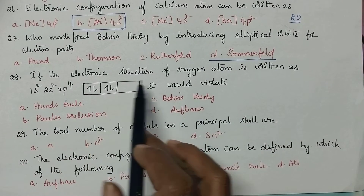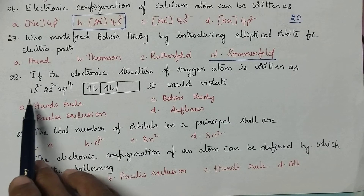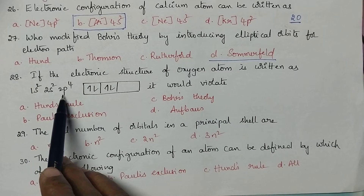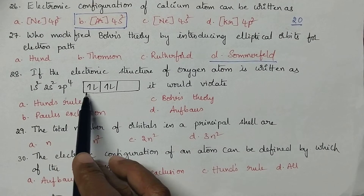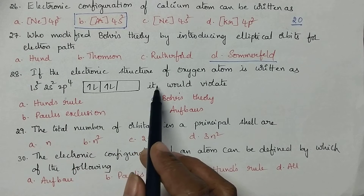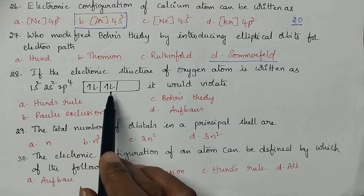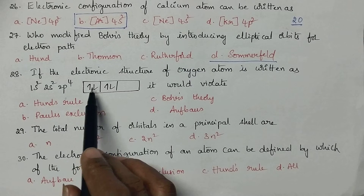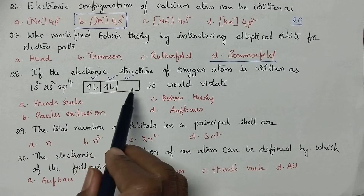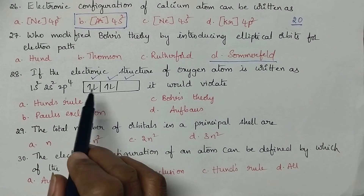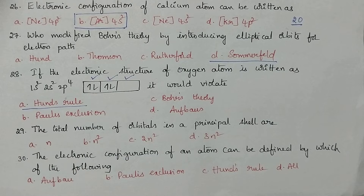If the electronic structure of oxygen atom is written as 1s2, 2s2, 2p4 and the detailed configuration of the outermost orbital is represented in a certain way, it would be a violation. Generally the orbital configuration is explained by Hund's rule: whenever degenerate orbitals are available, each orbital should be filled with a single electron each. Here the oxygen configuration is violating Hund's principle.